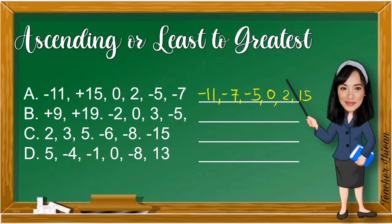Letter B: the integers are positive 9, positive 19, negative 2, 0, 3, and negative 5. The lowest is negative 5, followed by negative 2, then 0, then positive 3, then positive 9, and the highest is positive 19.